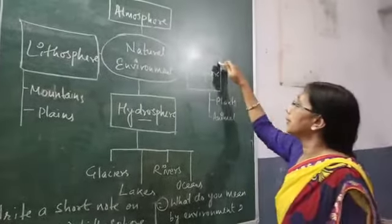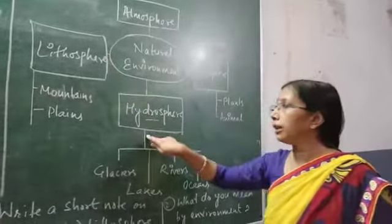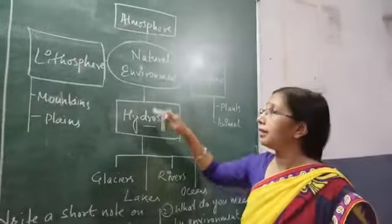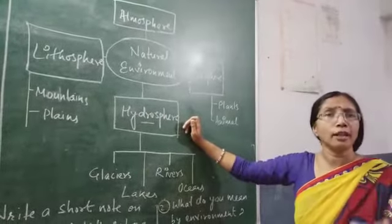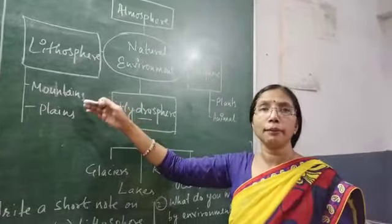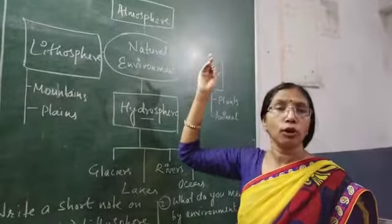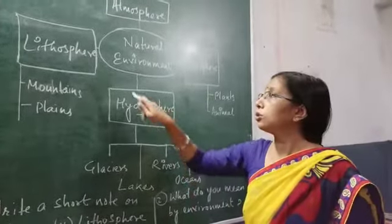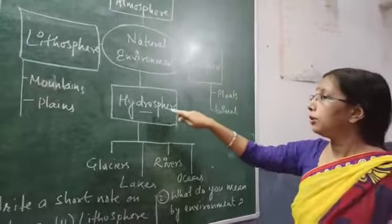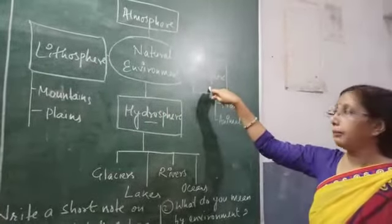The biosphere is the most important sphere. The biosphere is the zone where all three spheres — lithosphere, hydrosphere, and atmosphere — come together and life is present. Wherever there is life, these three spheres are present. There are many animals, human beings, and plants in the biosphere. In the atmosphere, micro-organisms and birds are also present. So the biosphere is the sphere where life exists, whether in the lithosphere, hydrosphere, or atmosphere.